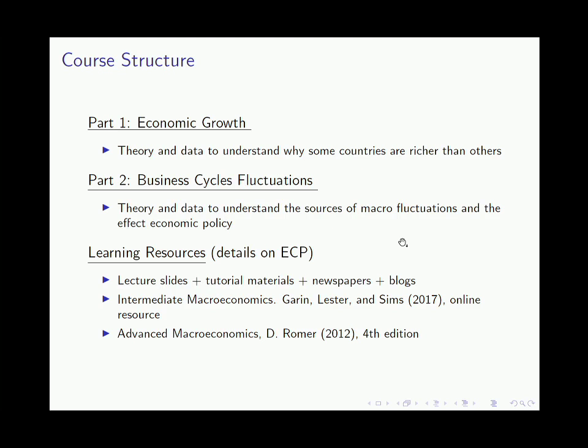The other book we'll use is Advanced Macroeconomics by David Romer — not Paul Romer the Nobel Prize winner, but David Romer. This will be used essentially for Lecture 4 on endogenous growth models.